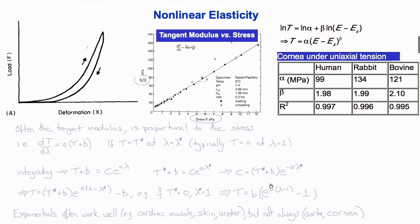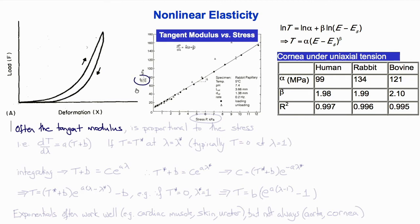Another important property of soft tissues is that their stress-strain relationship tends to be non-linear. Here you see a typical non-linear stress-strain curve for a ligament. For many soft tissues, the tangent modulus — the slope of this curve — is proportional to the stress.